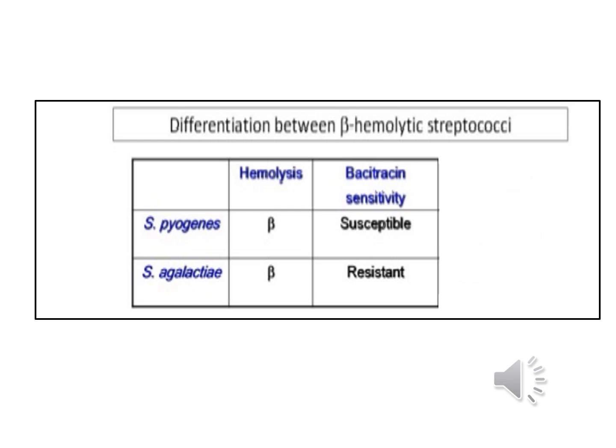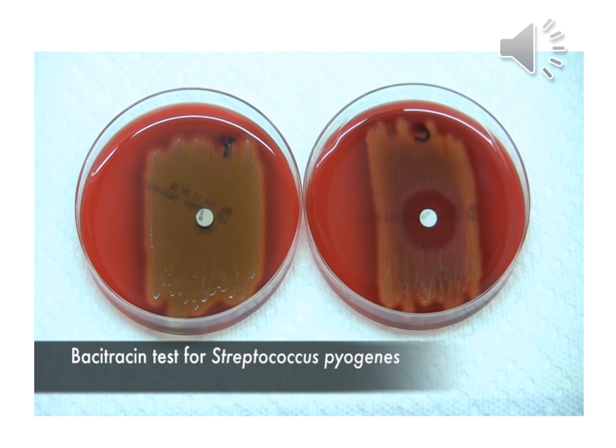The bacitracin susceptibility test is used to distinguish Group A Streptococcus (S. pyogenes) from other Streptococcus such as Group B Streptococcus agalactiae. When grown on blood agar, Group A Streptococcus is sensitive to bacitracin and shows a zone of inhibition around the bacitracin disc, while S. agalactiae is resistant to bacitracin and will not show a zone of inhibition. The right blood media represents S. pyogenes since it is sensitive to bacitracin, while the left represents S. agalactiae which is resistant.